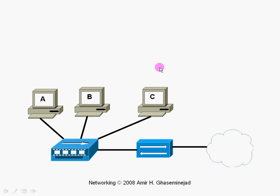As you see in this diagram, we have three computers, A, B, and C, connected through a number of twisted pair cables to a hub.